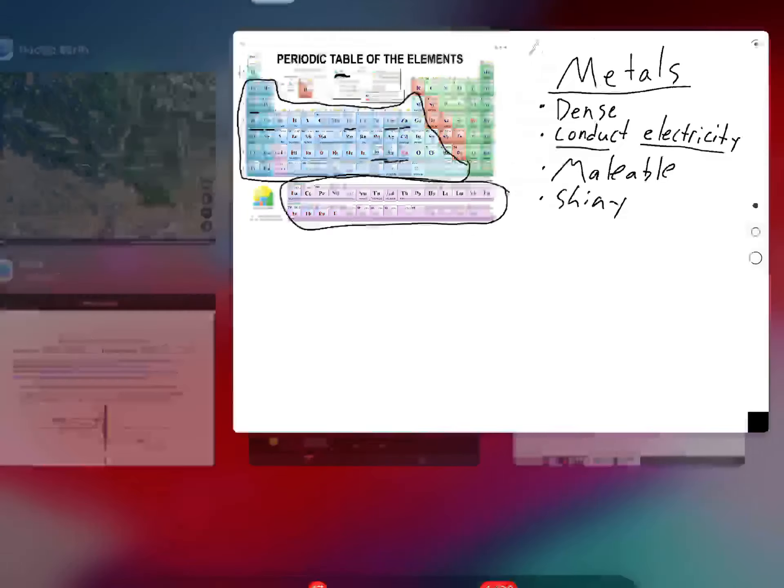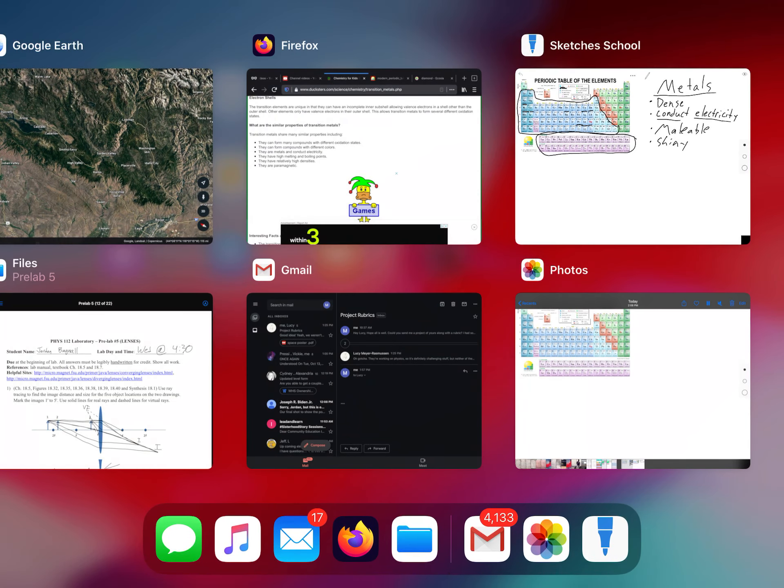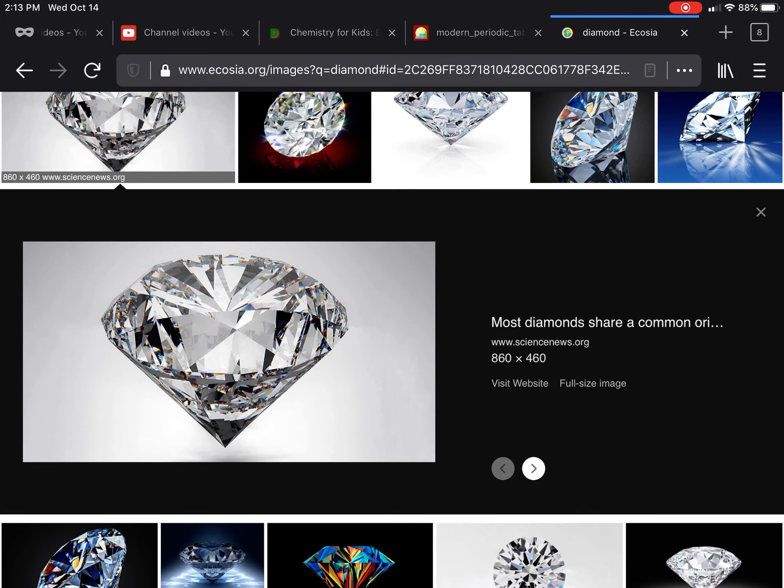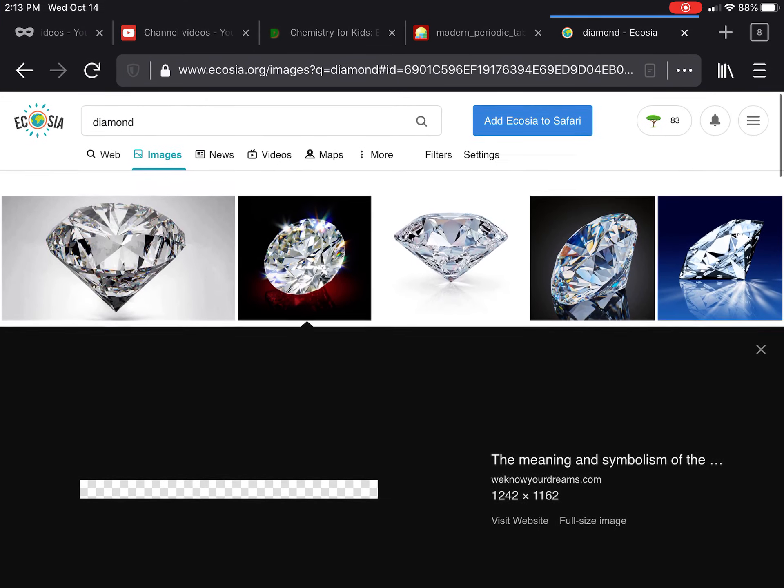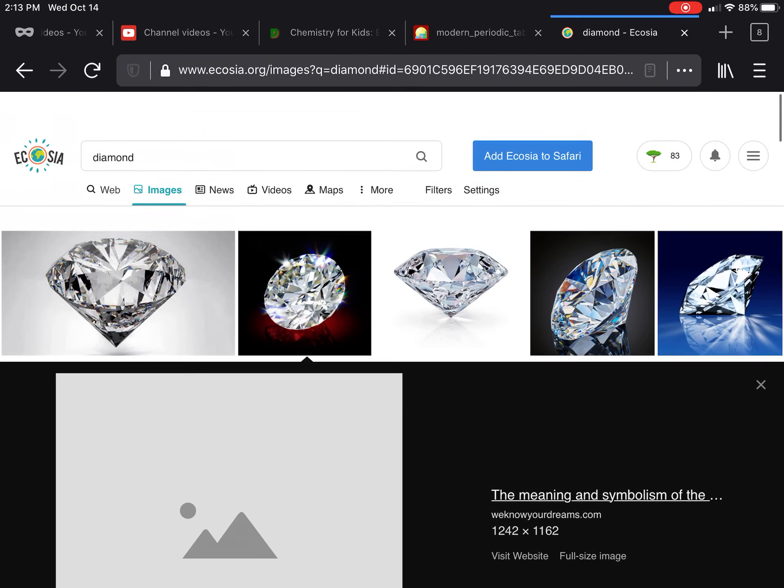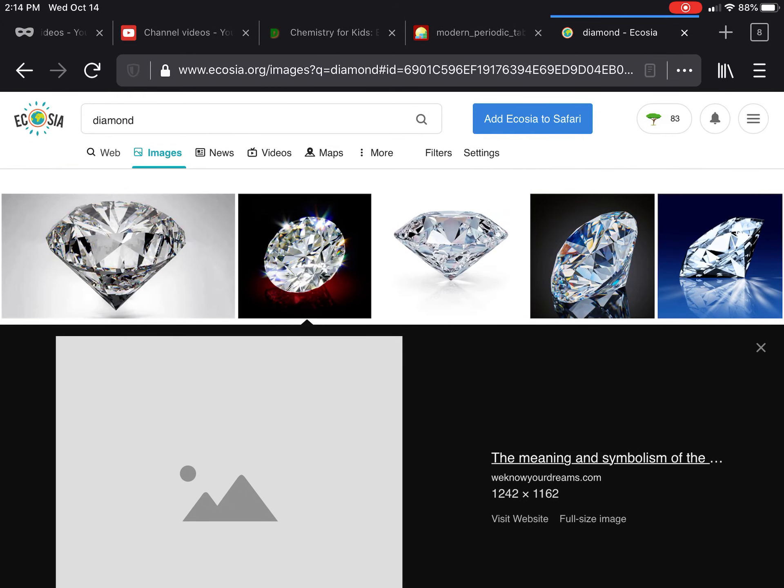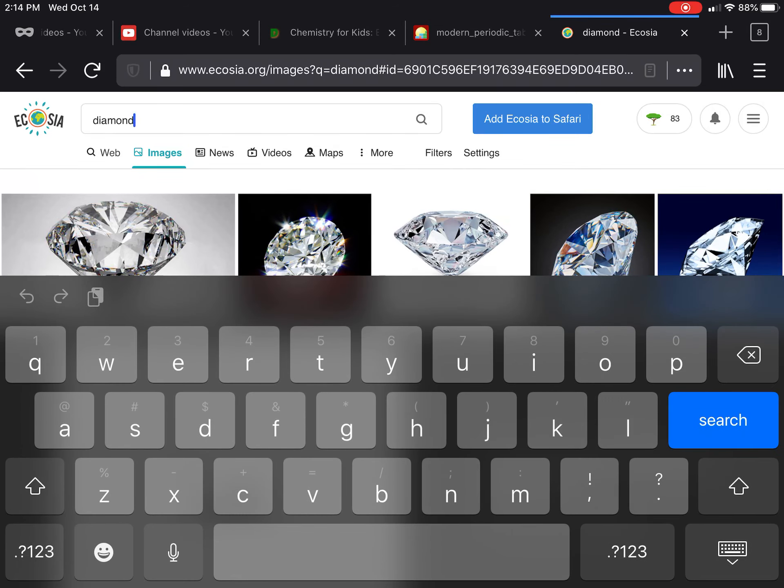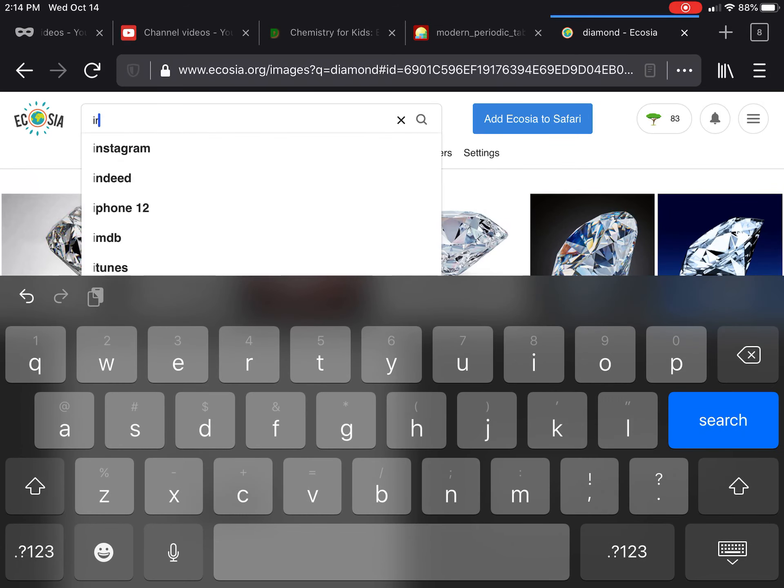Oh, this is a diamond. I forgot to show you this part from the last video I made, but diamond is made entirely out of carbon. So diamond's a good example of a non-metal. Let's look up some iron.